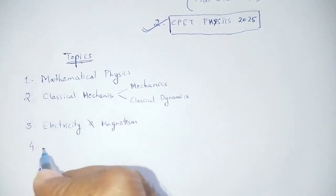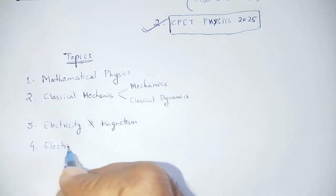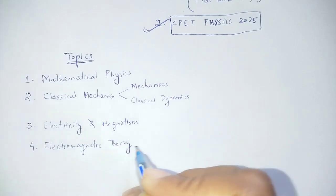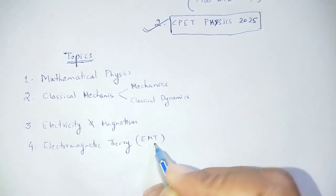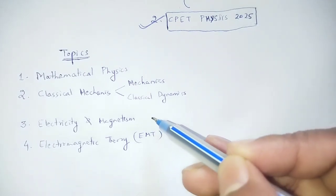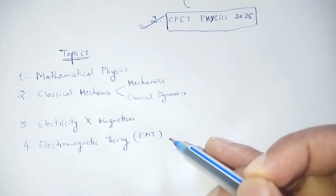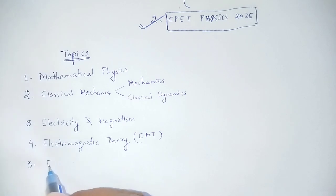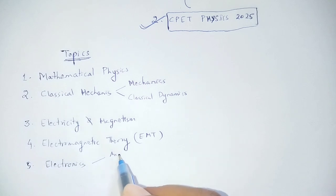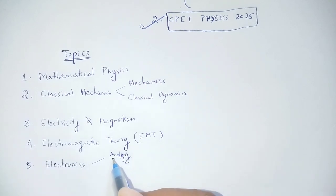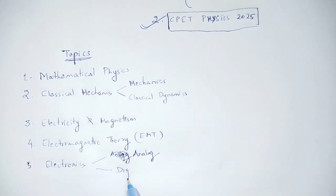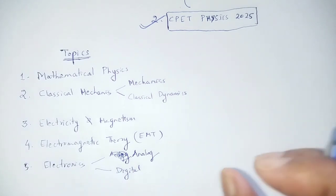Electromagnetic Theory — EMT — covers electrostatics, magnetostatics, and electrodynamics. Electronics includes both analog electronics and digital systems and applications.